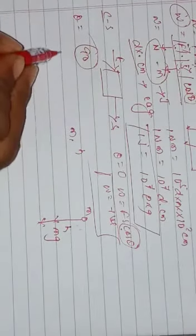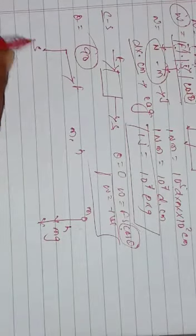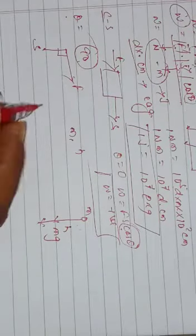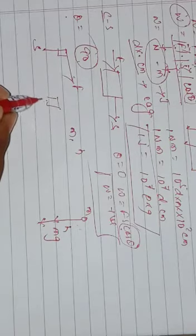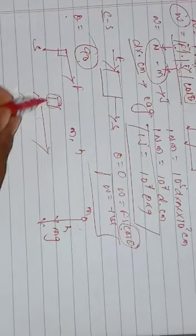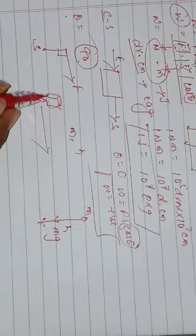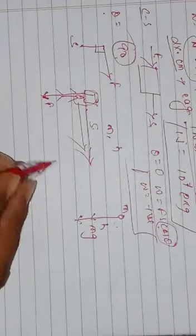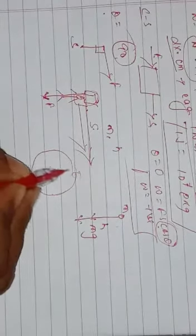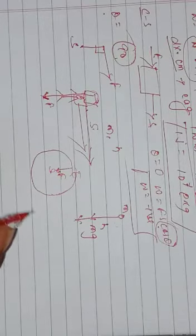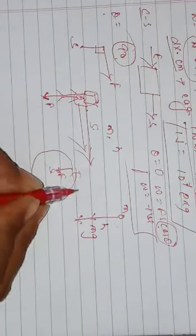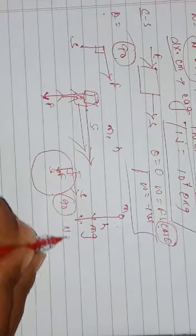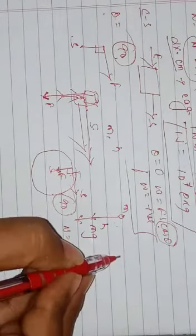Case 2: θ = 90°, when force and displacement are perpendicular to each other. cos90° = 0, so work done is zero. Example: a porter (coolie) carrying a load moves horizontally — the gravitational force is downward but displacement is horizontal, so the angle between them is 90° and work done is zero. Another example: Earth moving around the Sun — the centripetal force is perpendicular to displacement, so work done is zero.